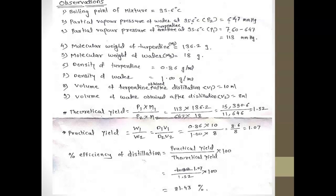The volume of turpentine obtained after distillation, V1, is 10 ml, and the volume of water obtained, V2, is 8 ml. Calculating the efficiency requires both a theoretical yield and a practical yield. The formula for theoretical yield is (P1 × M1) / (P2 × M2), where P1 and M1 are the partial vapor pressure and molecular weight of turpentine, and P2 and M2 are those of water. Substituting the values gives a theoretical yield of 1.32.